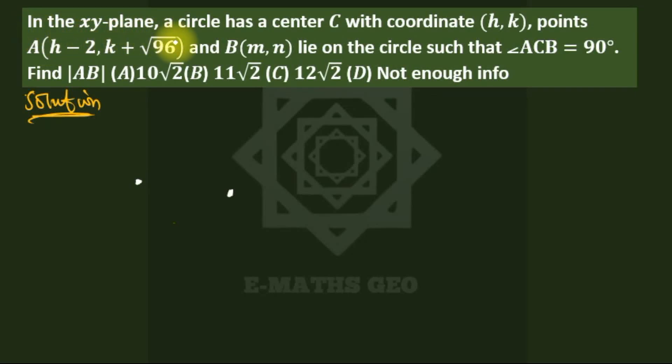In the xy-plane, a circle has a center with coordinate (h, k), point A with coordinate (h - 2, k + √96), and B (m, n) lie on the circle such that angle ACB is 90°. We are asked to find the length AB.